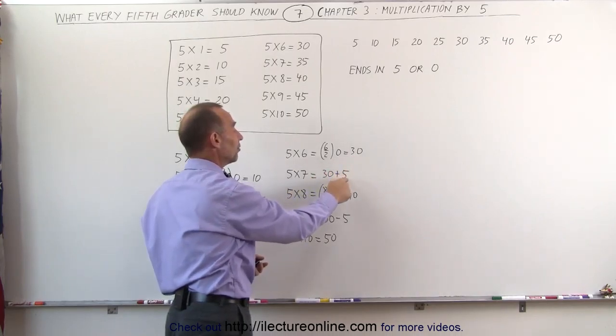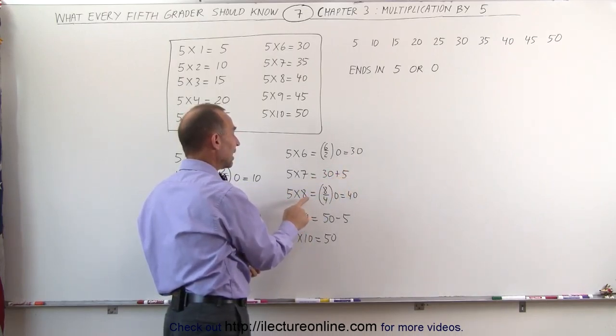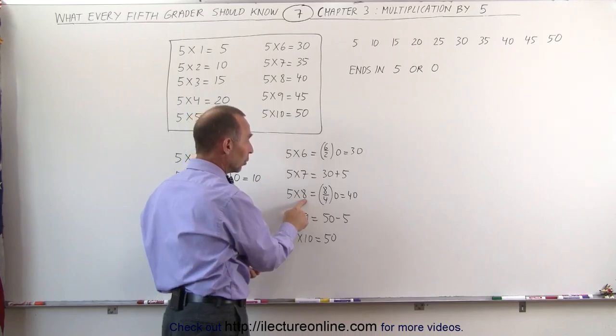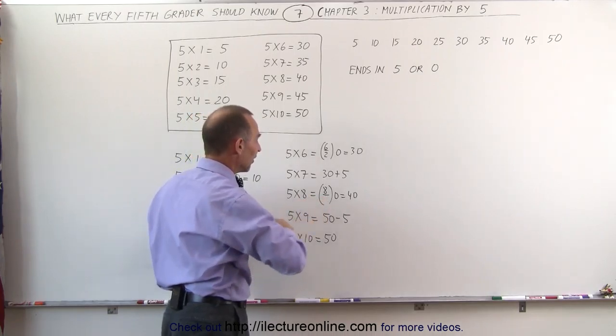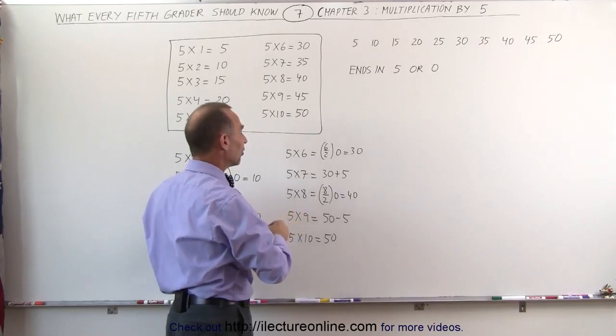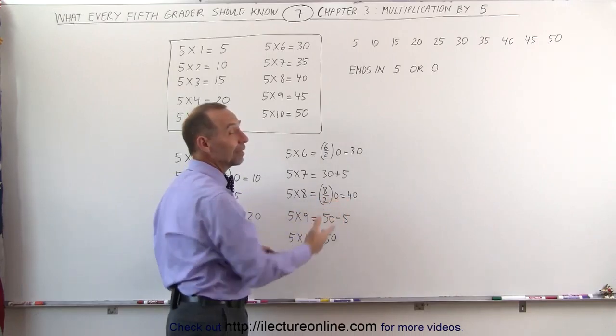5 times 7 is the previous answer plus 5. 5 times 8, you take half of 8, which is 4, and that should be divided by 2. You take half of 8 and add a 0, half of 8 is 4, add a 0, you get 40.